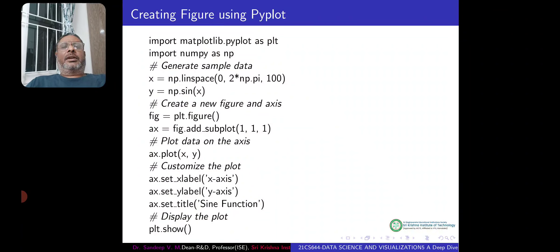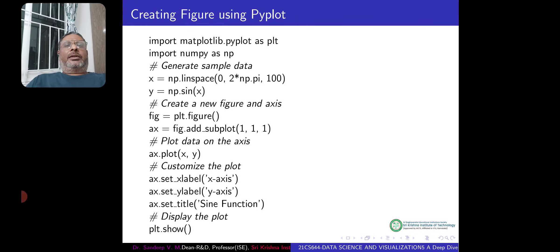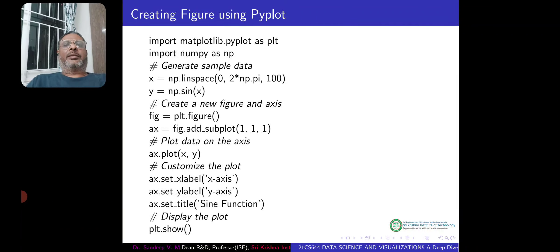So title for the axis we have created—it's a single one. So along x-axis, we write x-axis. Along y-axis, we write y-axis. And title we put sine function. So till here, nothing will be seen on the screen. The plot will appear only after this plt.show is run. So when we run this code, we get the same graph as we got in the previous example.